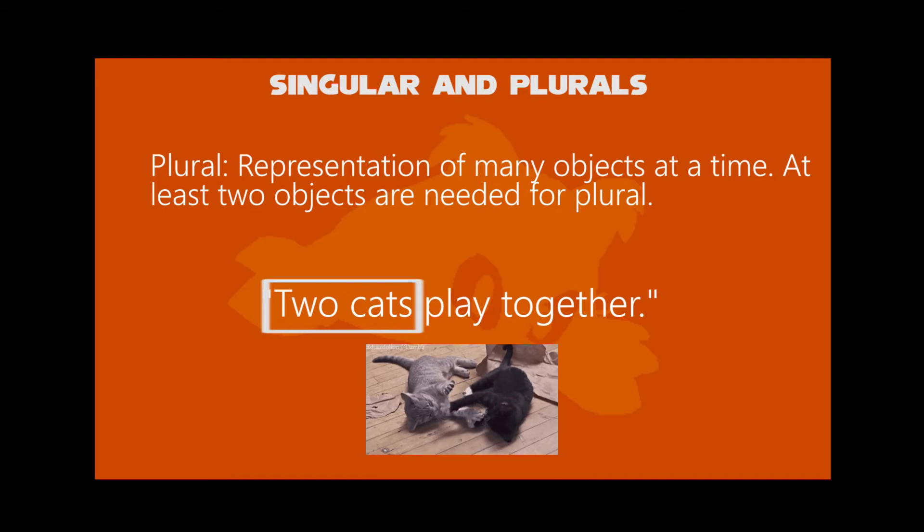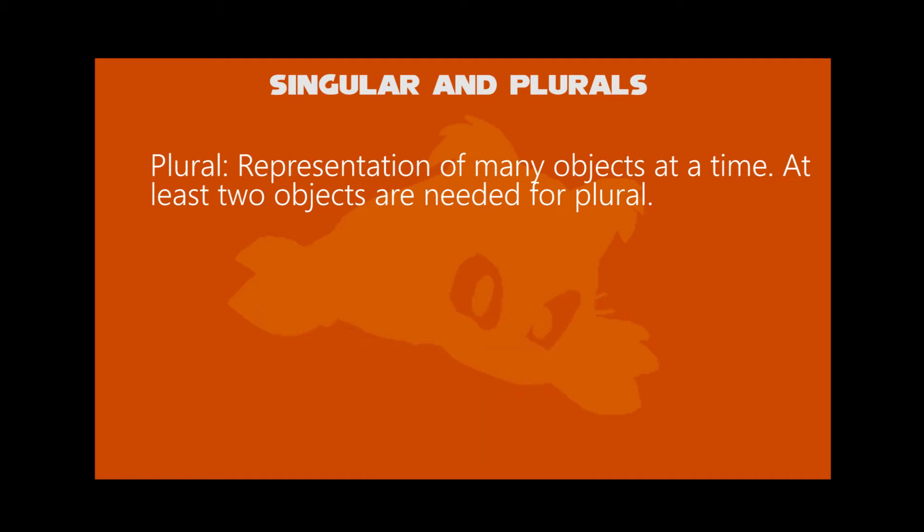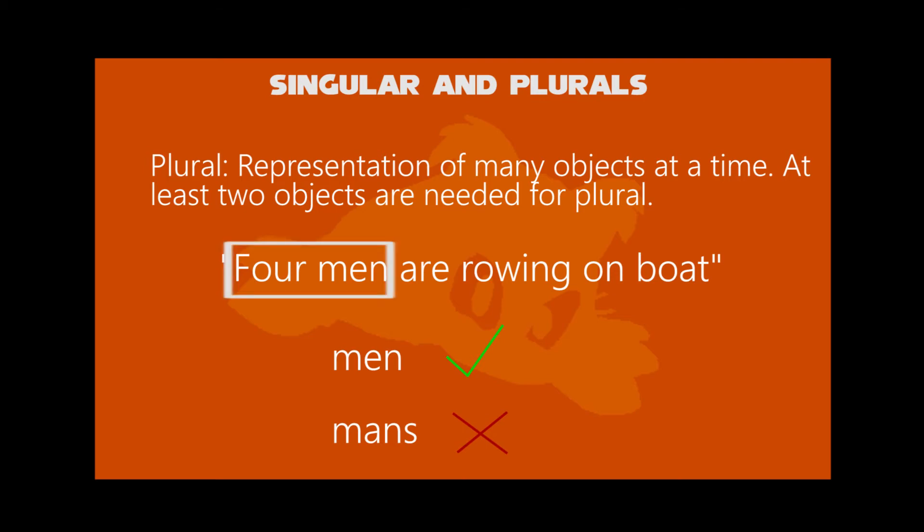Two is dependent on number. In case of another form, we do not put s in the last place, like men is a plural of man, not mans. For example, four men are rowing on a boat. The four men is indicated on plural, dependent on how many of them.